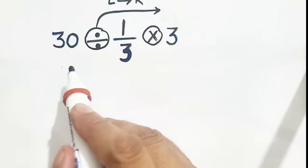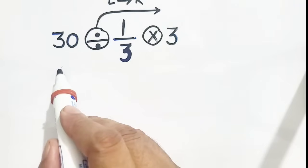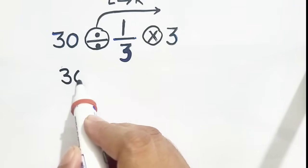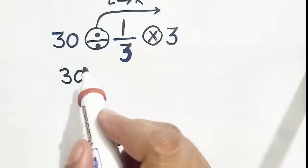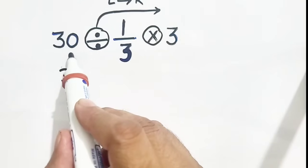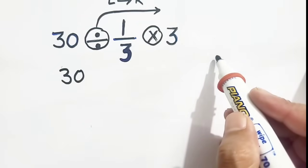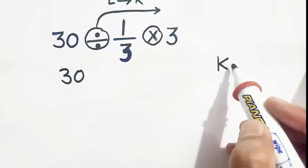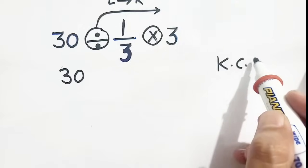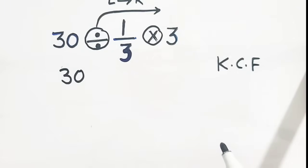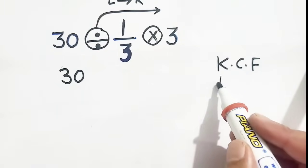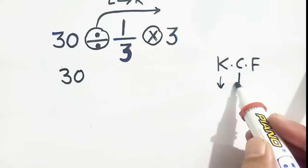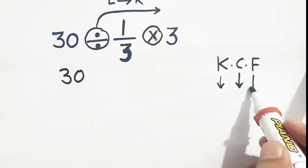So it will be 30. And here we will apply KCF. KCF: K means keep, C means change, F means flip.